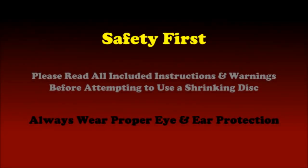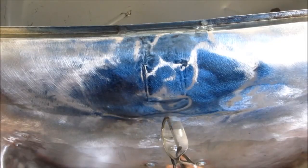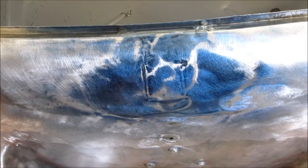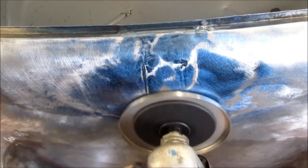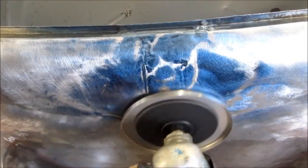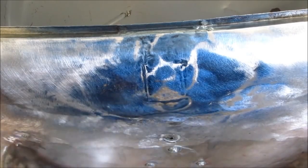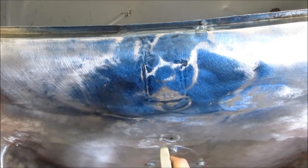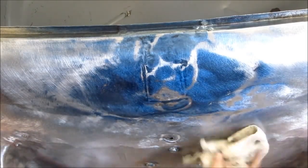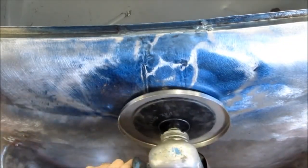Here I am taking some passes with the shrinking disc. And then cooling it off with a mist from the spray bottle with soapy water in it. And then I have a rag for drying the surface after the fact.